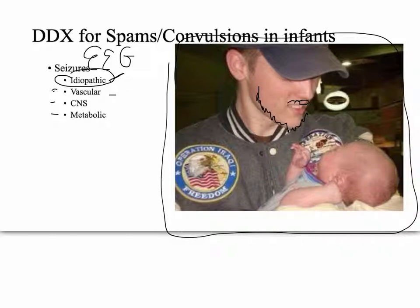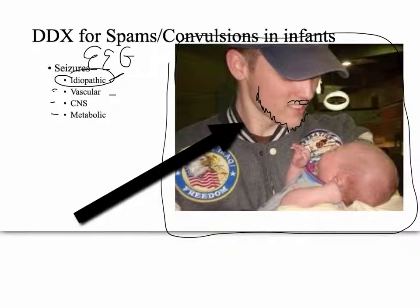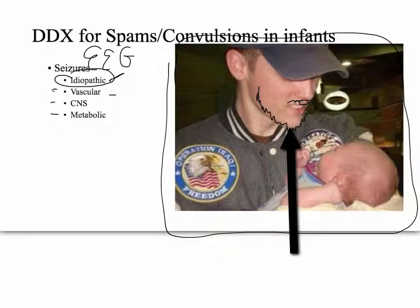We're going to rule out a stroke or other vascular event in the brain — this could also include migraines. You might think strokes only happen to old people, but you can actually get strokes even pre-birth. A baby can have a stroke before delivery. In fact, from a town of 6,000 people, I know a kid that had a stroke before he was ever born — so it's probably a little bit more common than you'd think.